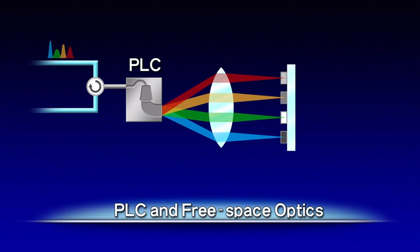Alternatively, by reducing the transparency of liquid crystal, we can attenuate the optical signal. By doing so, we can make the optical signal strength uniform.